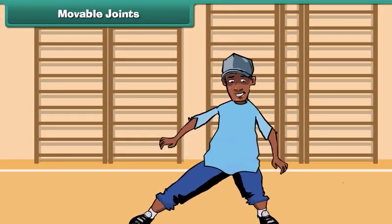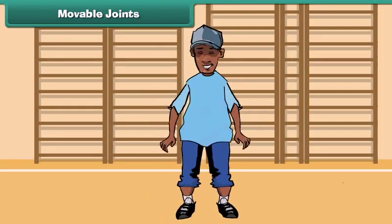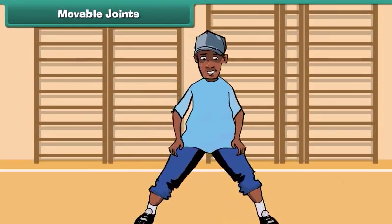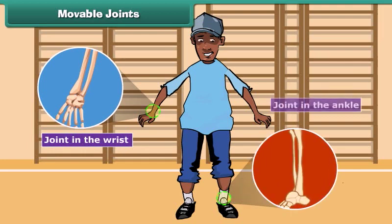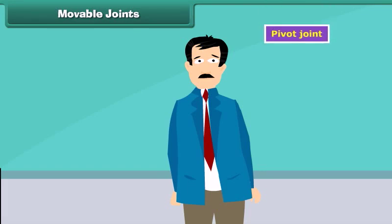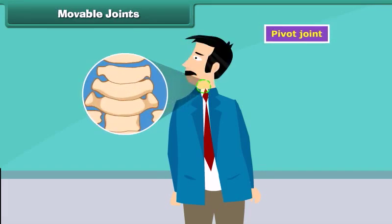Friends, have you ever noticed that we can move our hands and our feet in different ways? The joints which allow such movements are called gliding joints. Joints in the wrist and the ankle are examples of these joints. Pivot joint: our neck allows us to turn our head on both sides. Have you ever thought about what makes this possible? This is possible because of the pivot joint.